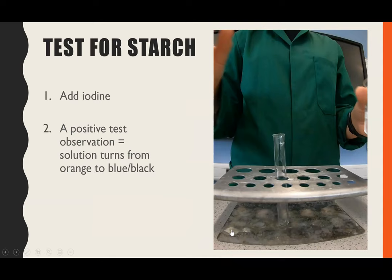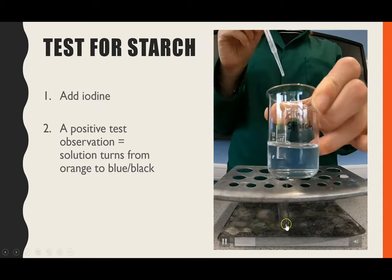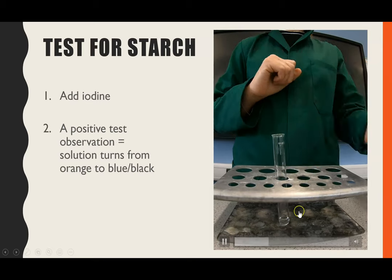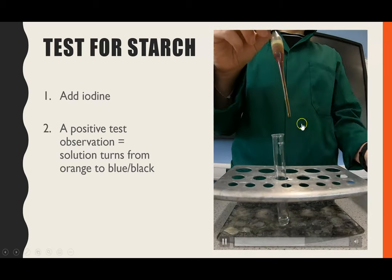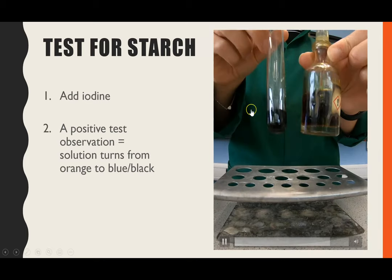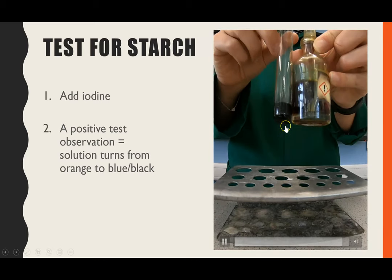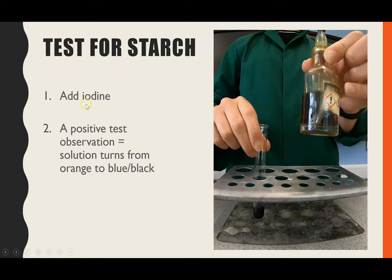The test for starch: the reagent you add is iodine. Here I've got my sample of starch, and you add iodine, which is a browny orange colour. If starch is present, you get a blue-black colour. So the reagent is iodine, and the positive result is a colour change from orange to blue-black.